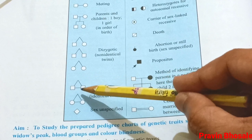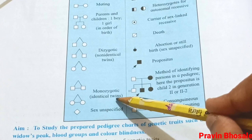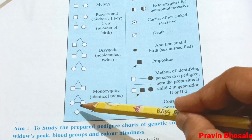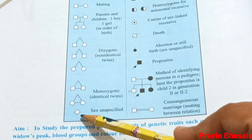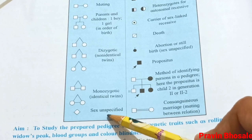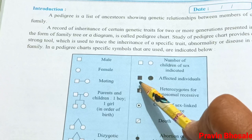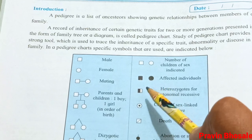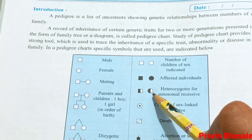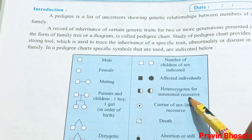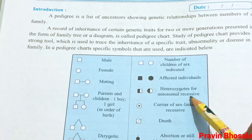The next symbol represents monozygotic, that is identical twins. It can be either boy and boy or girl and girl — it cannot be boy and girl. This symbol is for unspecified sex. Then a filled square and filled circle represent affected individuals. A half-darkened square and half-darkened circle represent heterozygote for autosomal recessive. Please note — this represents heterozygote for autosomal recessive.